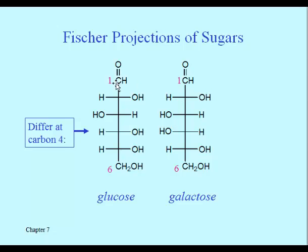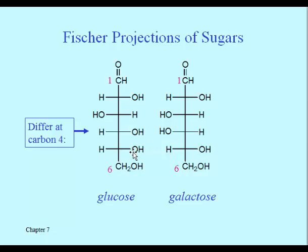You can see that they're identical at the top — carbon two is the same — but there is an oppositeness to the configuration at carbon four. Notice it's at carbon four where they appear to be mirror images, but carbon three is the same, carbon five looks perfectly superimposable with its isomer on the right, and carbon six is identical for both.